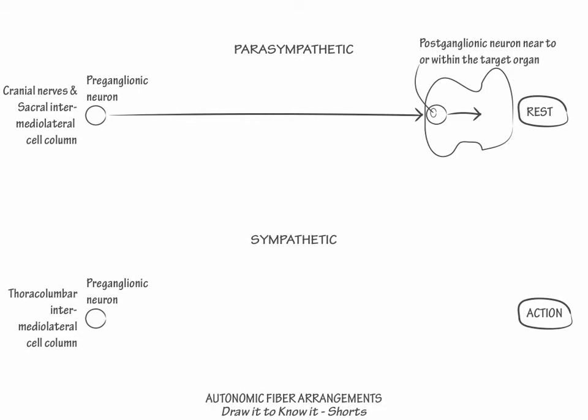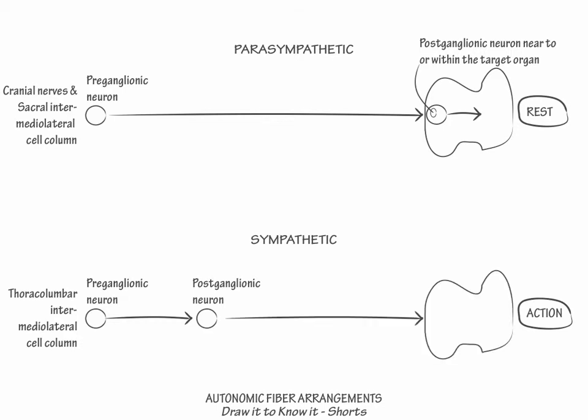In the sympathetic nervous system arrangement, show a preganglionic sympathetic axon synapse on a nearby peripheral ganglion. Most sympathetic preganglionic axons are short and synapse close to their site of origin. Show a postganglionic sympathetic fiber travel a long distance to its target organ, and also to the body walls and limbs, where the sympathetic nervous system innervates sweat glands, hair fibers, and blood vessels of skeletal muscle and skin.